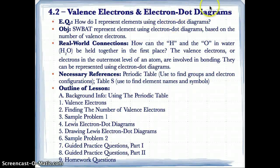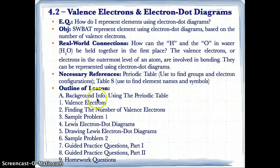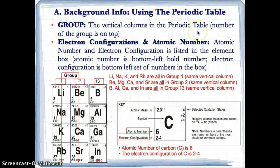4.2 valence electrons and electron dot diagrams. For this lesson, please use the periodic table to find electron configurations and the atomic number, as well as Table S to find element names and symbols. Also use the periodic table to find groups and electron configurations. Let's move on. Before going on to this lesson and talking about valence electrons and electron dot diagrams, let's talk about how to use the periodic table.